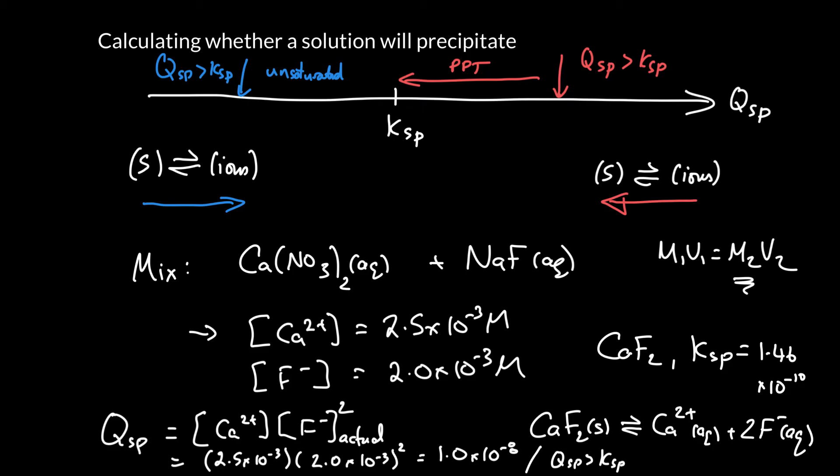So this solution, when you mixed it together, would form a precipitate. Notice the original solutions were perfectly dissolved. They were aqueous. But when they combine, those ions have such a high concentration that they will no longer dissolve. They will have to precipitate.